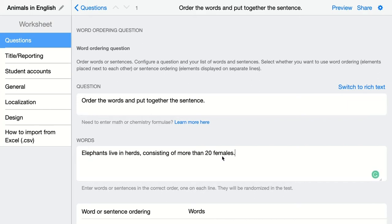This is the sentence I want them to complete. Elephants live in herds consisting of more than 20 females. So here I'm going to add words one by one on each line in the right order. Elephants, live, in, herds. You can even make a separate word out of the comma, like this.